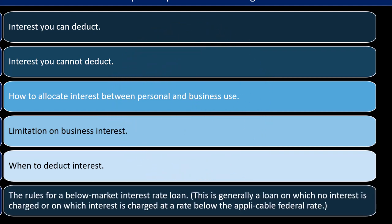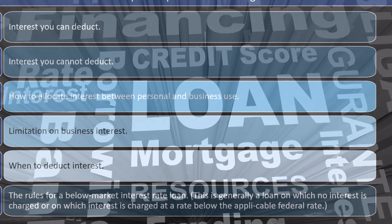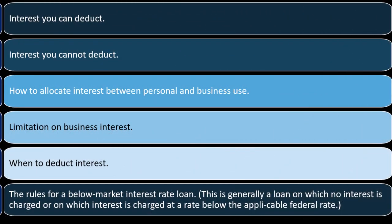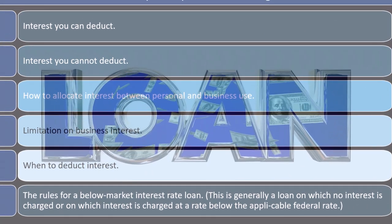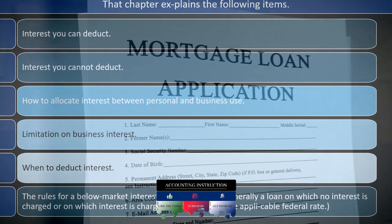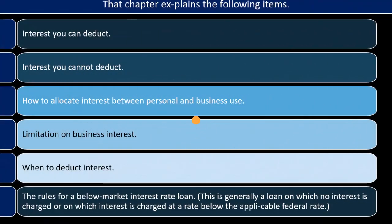There are specific rules for below-market interest rate loans — generally a loan on which no interest is charged, or interest is charged at a rate below the applicable federal rate. You might encounter situations where a loan has no stated interest rate, perhaps because it's structured like a lease, or in the case of family member loans. Short-term loans sometimes don't explicitly calculate interest, instead imputing it into the payments.